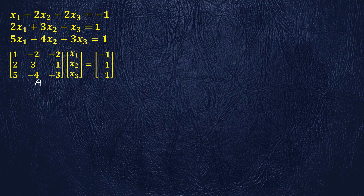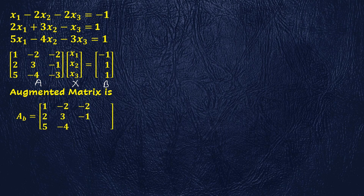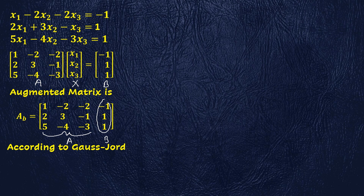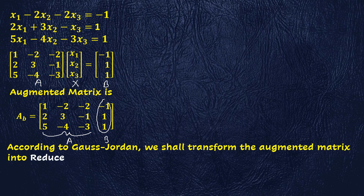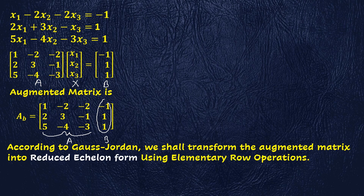The matrix of coefficients is denoted by A, the matrix of unknowns is denoted by x, and the matrix of constants is denoted by b. We form the augmented matrix by adding the matrix of constants b to the matrix of coefficients A.